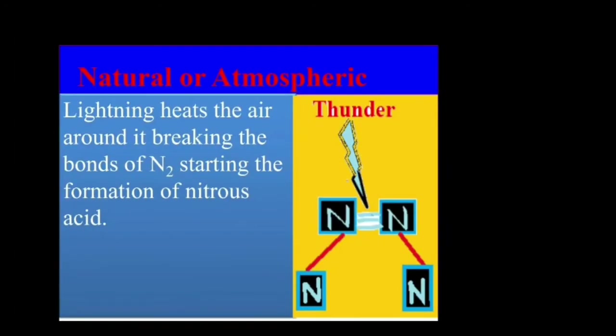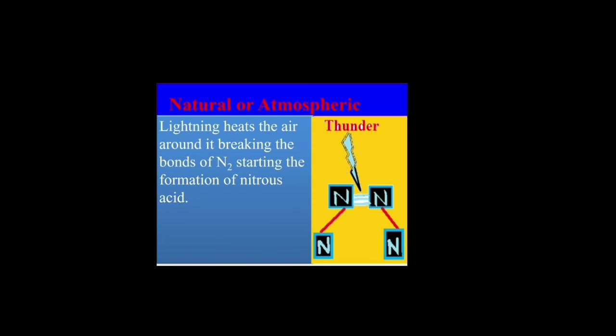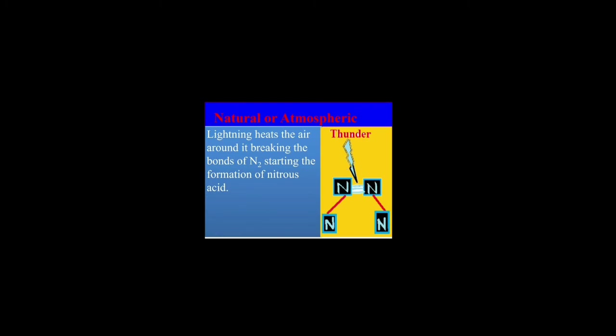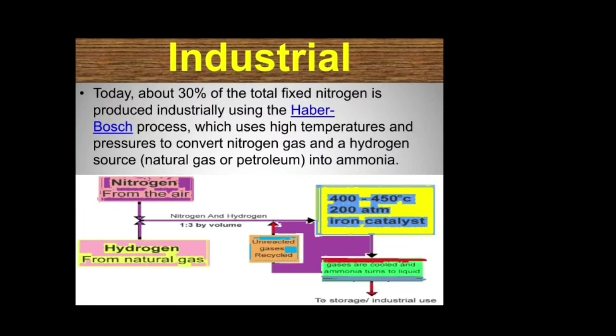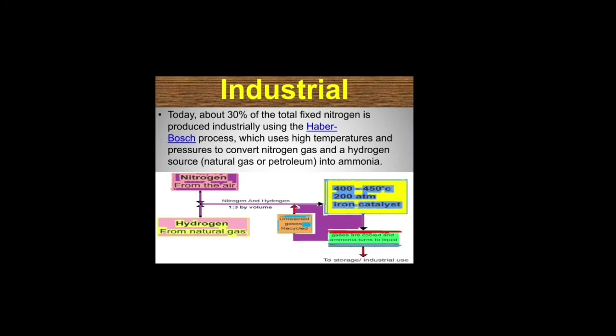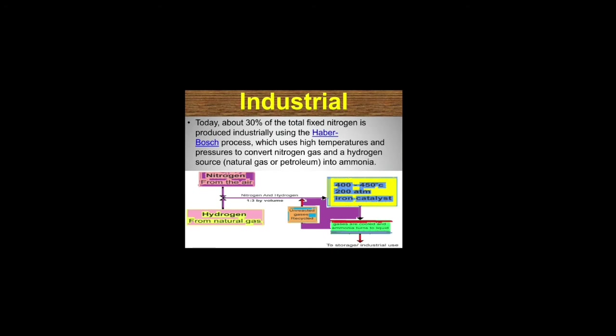Nitrogenases are destroyed in the presence of oxygen. Natural or atmospheric nitrogen fixation: nitrogen in pure form cannot be solubilized in water, but it is converted to oxides due to lightning flashes, which come down to the soil with rain or snow. Industrial or artificial nitrogen fixation: the industrial production of ammonia is by mixing nitrogen and hydrogen, but it requires high temperature and pressure, and an iron catalyst which removes oxygen from the environment, as in fertilizer factories.